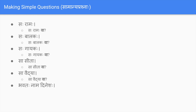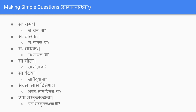More examples: 'bhavataha nama Dinesh va' - is your name Dinesh? The statement 'saha balakaha' (he is a boy), 'saha gayakaha' (he is singer), 'sa sita' (she is Sita) remain complete as statements - only 'va' is added to confirm. One more example: 'esha samskruta kaksha' (this is Sanskrit class), and the question would be 'esha samskruta kaksha va' (is this Sanskrit class?). The statement remains the same; only 'va' is added at the end.